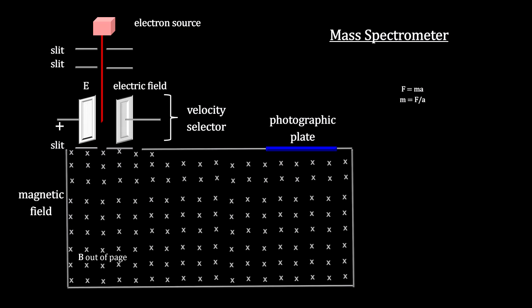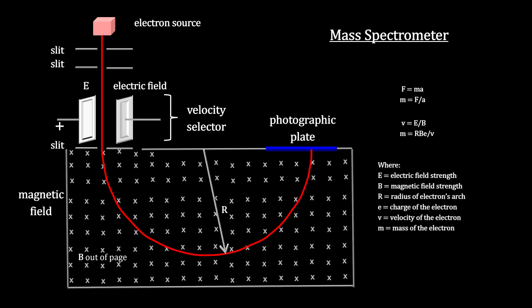So we fix the particle velocity with an electric field, measure the radius of the resulting curve as it moves through a magnetic field, and use the basic electric, magnetic, and centripetal force equations to calculate mass.